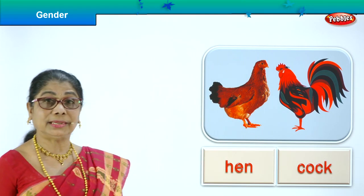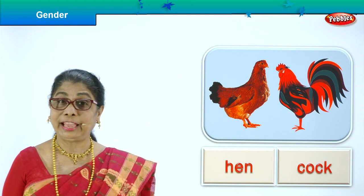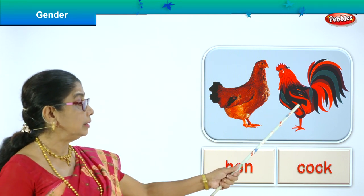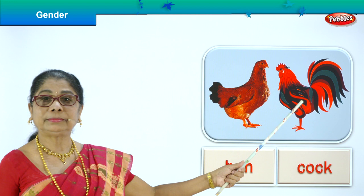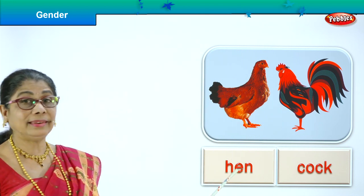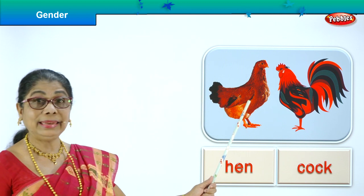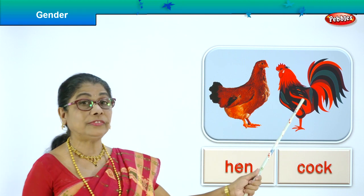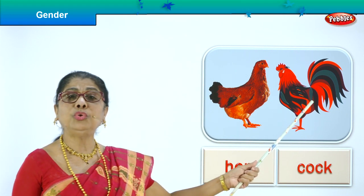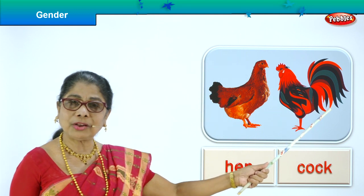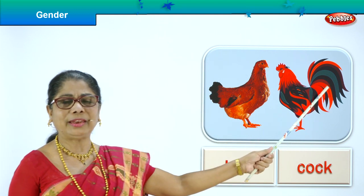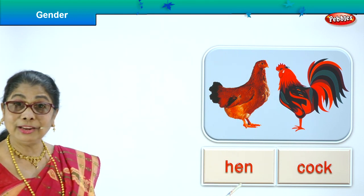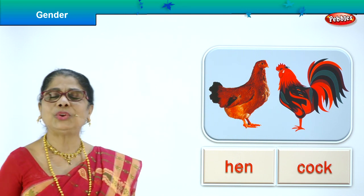Now you have some birds here. In the bird family too, we have masculine and feminine genders. Here is a cock — that's masculine gender. Here is a hen — feminine gender. The hen gives us eggs. The cock is so colourful with all his feathers and calls cock-a-doodle-doo to wake us up early. Cock is masculine, hen is feminine. Are you learning to read? Good.